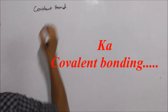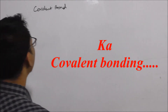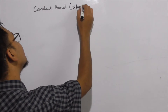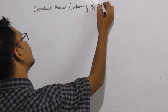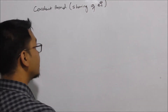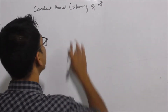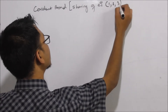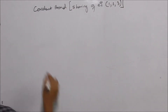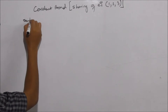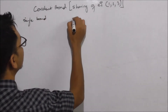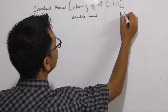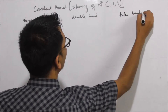Covalent bond. A covalent bond is formed by the sharing of electrons. Sharing of electrons can involve sharing 1 electron, 2 electrons, or 3 electrons between atoms. For example, we have a single bonded system, a double bonded system, and a triple bonded system.